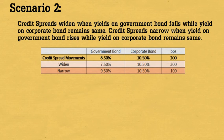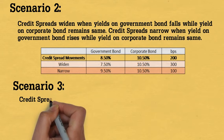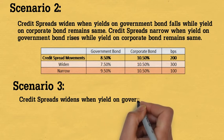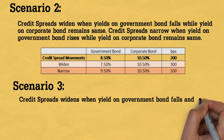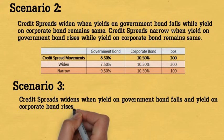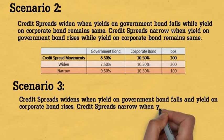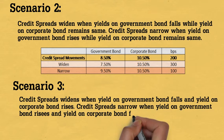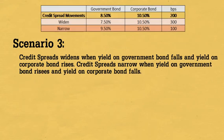Scenario 3. Credit spread widens when the yield on the government bond falls and the yield on the corporate bond rises. Credit spread narrows when the yield on the government bond rises and the yield on the corporate bond falls.